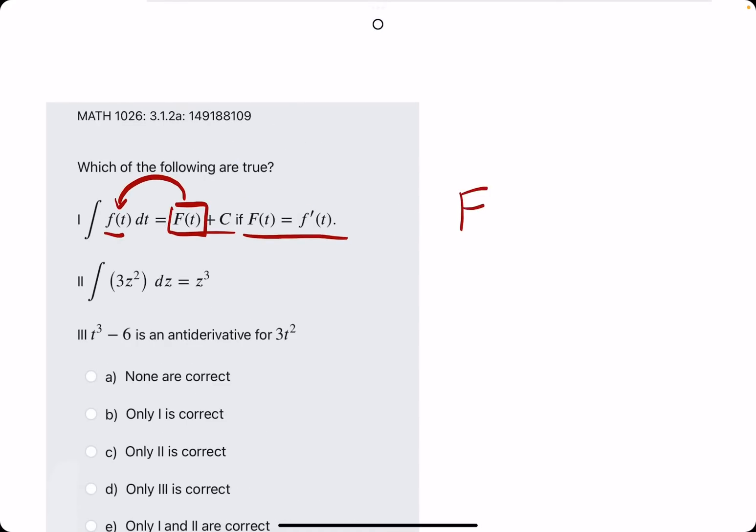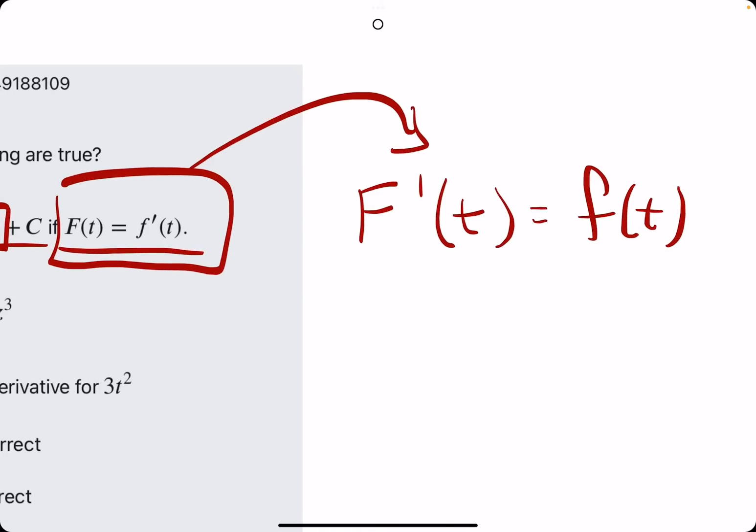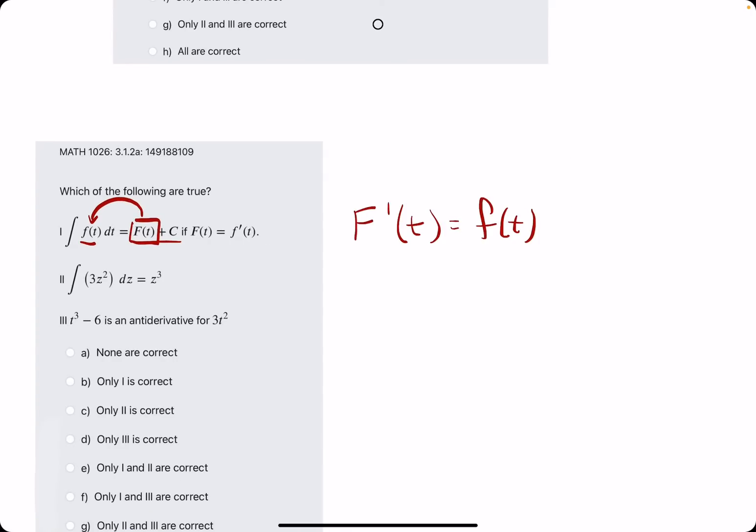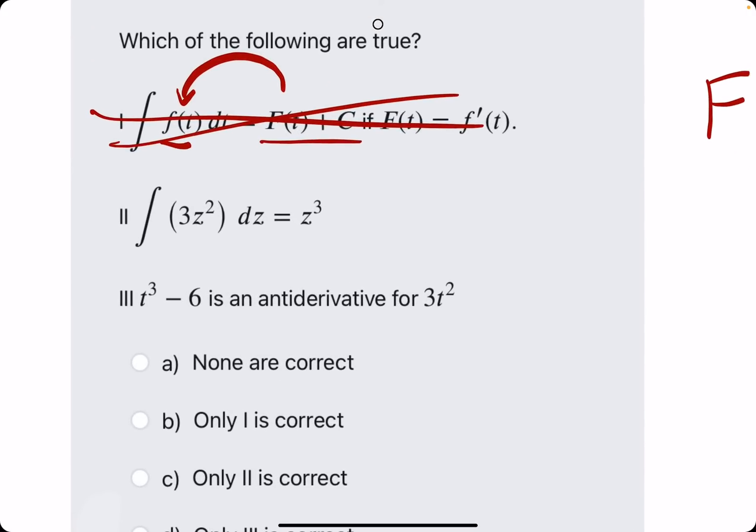Which means, if we take the derivative of capital F(t), we get lowercase f(t). In other words, if we take the derivative of capital F(t), we get lowercase f(t). This does not match this. They're saying sort of the opposite, which makes this statement false. If it had said this instead, it would be true.